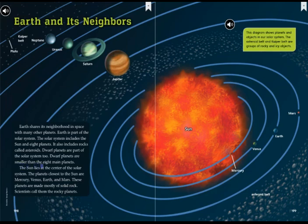The sun lies at the center of the solar system. The planets closest to the sun are Mercury, Venus, Earth, and Mars. These planets are made mostly of solid rock. Scientists call them the rocky planets. When I read, I pause after each section of text to summarize the most important ideas. This helps me check my understanding and remember information. I might summarize Earth and its neighbors like this. Earth is part of the solar system. The solar system includes eight planets, asteroids, and dwarf planets. The sun is at the center of the solar system, and Earth is one of the planets closest to the sun.